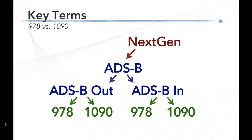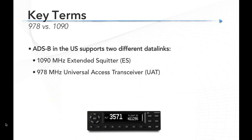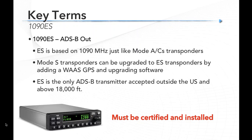In the United States, ADS-B uses two different frequencies — or data links: 978 MHz and 1090 MHz, for both ADS-B out and ADS-B in. In other countries, only 1090 is used. The 978 frequency is the reason we can get weather in the United States, because it's the optional frequency here. When 1090 is used for ADS-B, it's referred to as an extended squitter; 978 is referred to as a Universal Access Transceiver, or UAT.